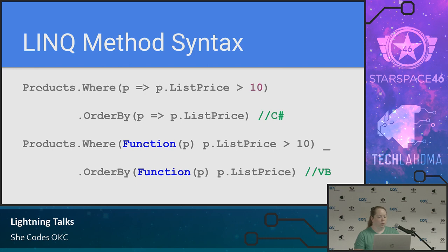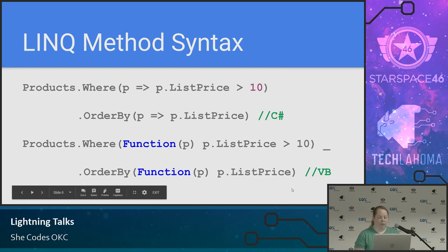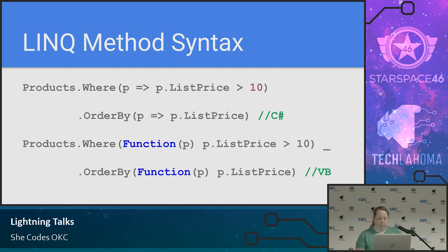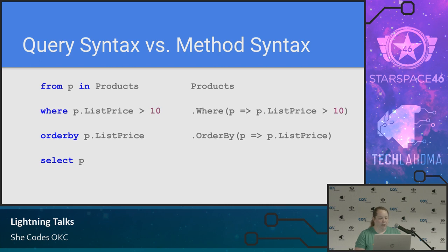Same thing we were doing before — looking at our products, filtering based on the list price being greater than 10, and then ordering by list price. If I don't select anything specific, I'll just get the products themselves. This VB code is doing the same thing but is definitely more verbose. The method syntax might feel more comfortable if you're coming from JavaScript or C#, and if you prefer SQL, the query syntax on the left might feel more comfortable. I'm generally going to be using method syntax unless I'm doing something more complicated. You can use both and just choose which one works better for you.